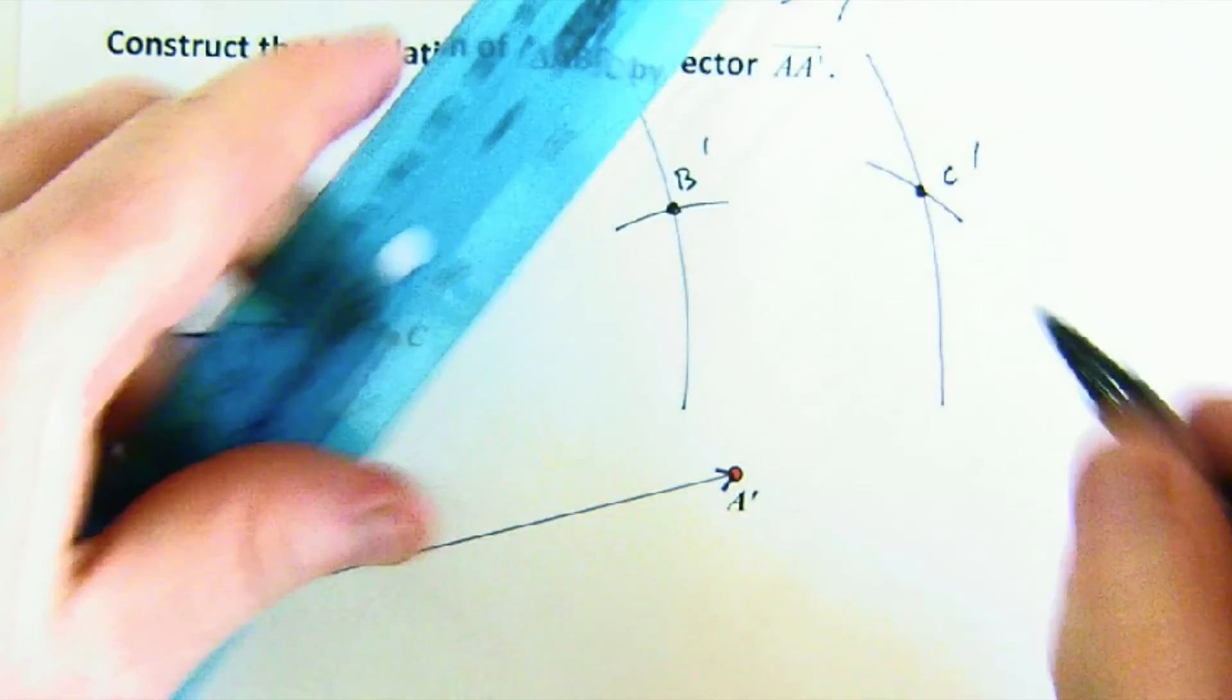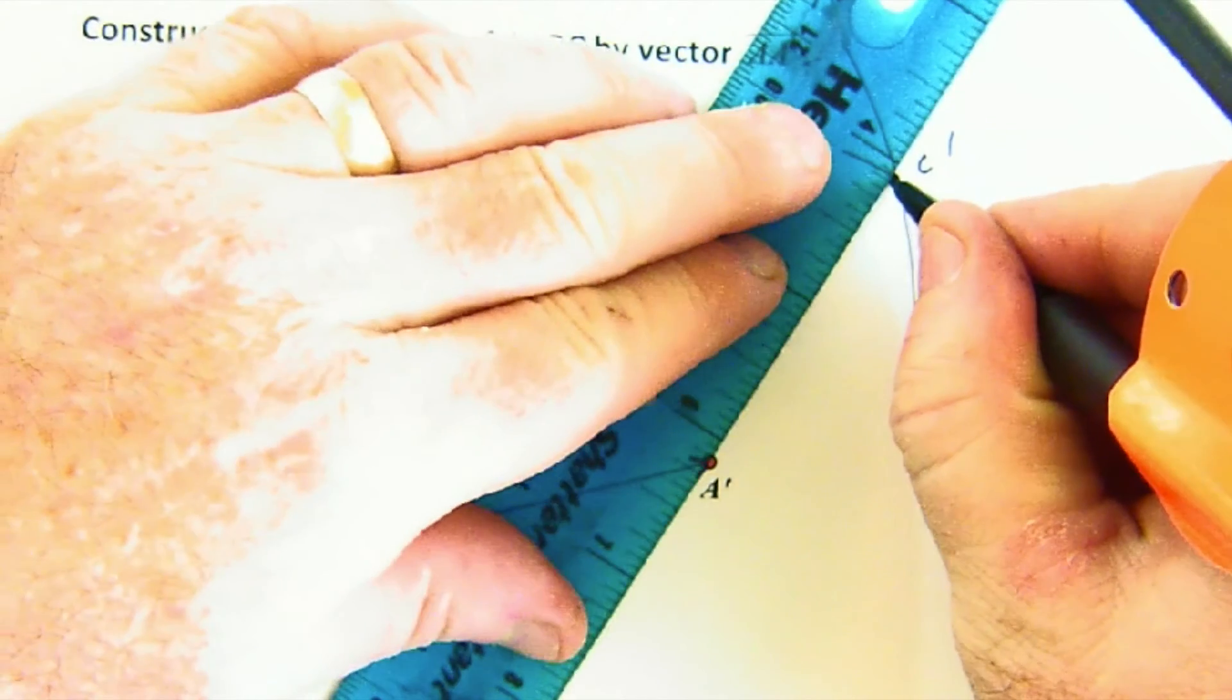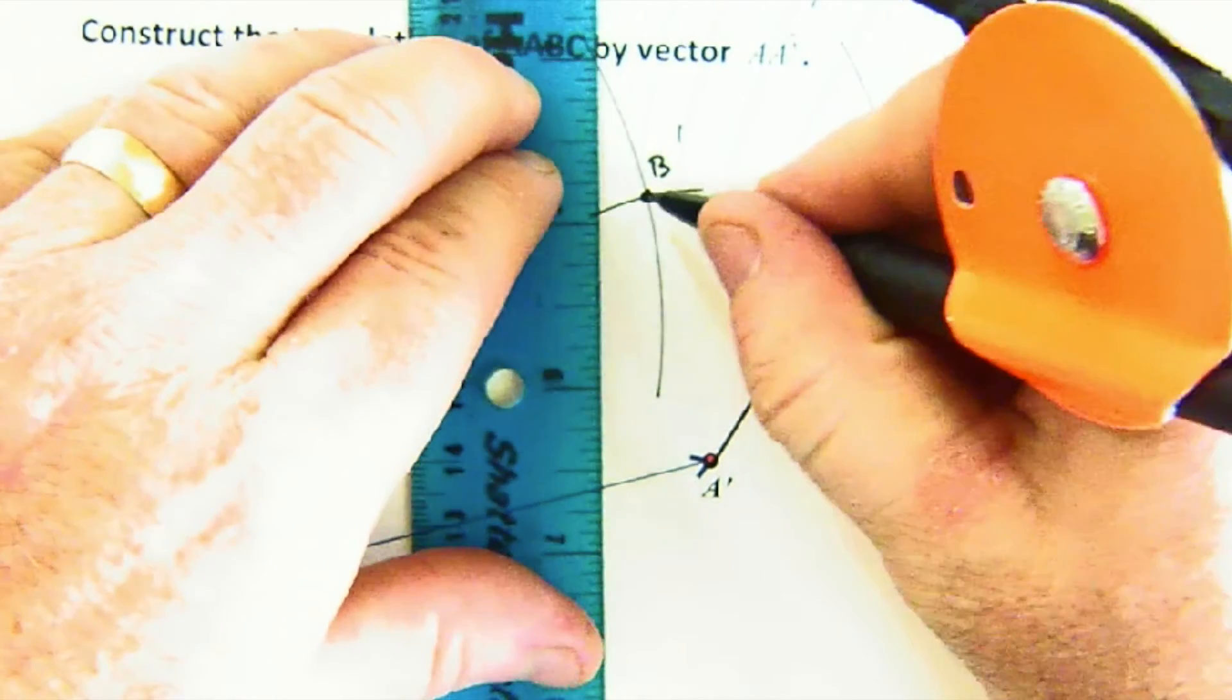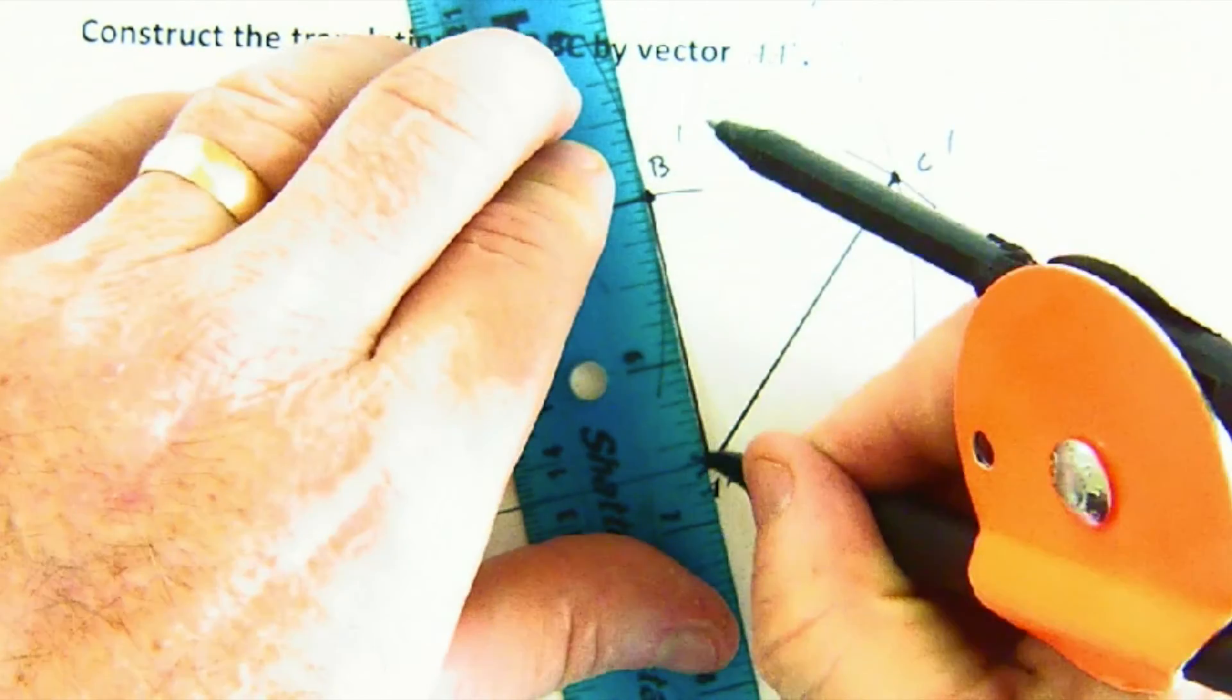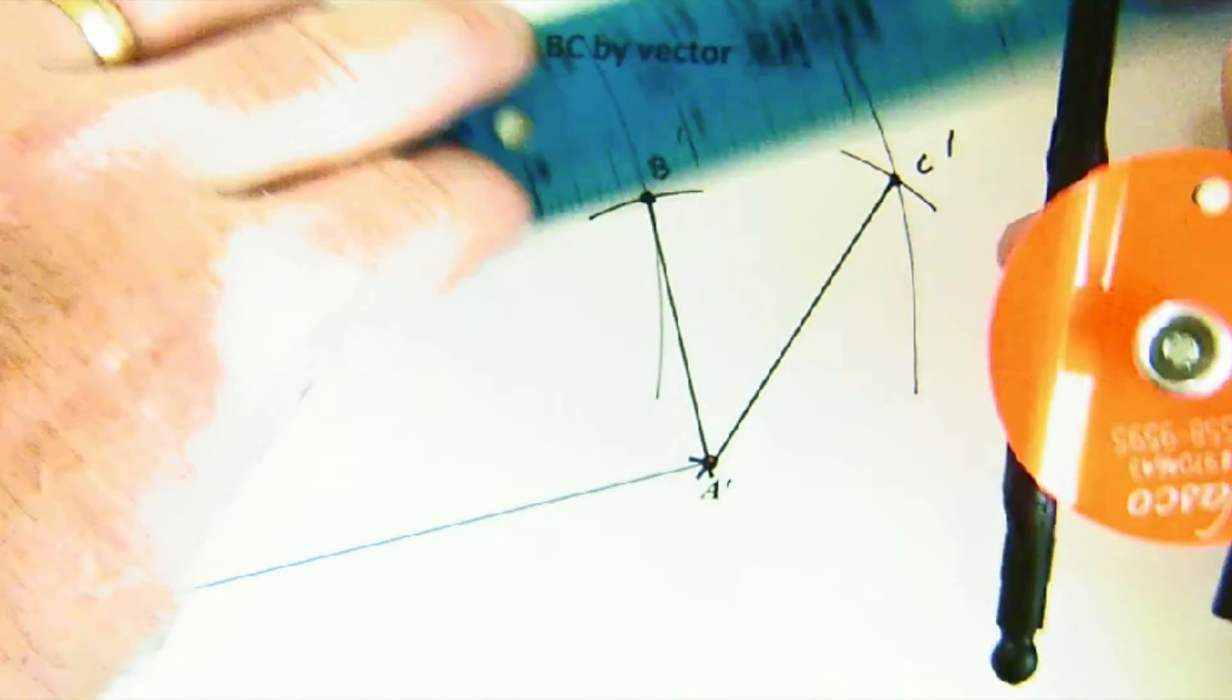And then again, I'm able to close this out using my segments here to form the triangle A', B', C'.